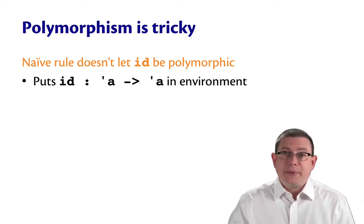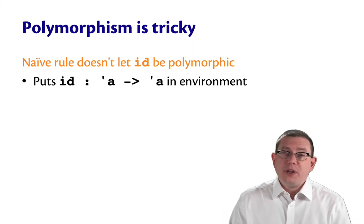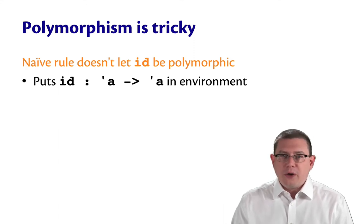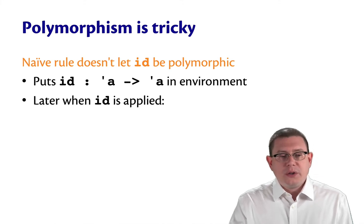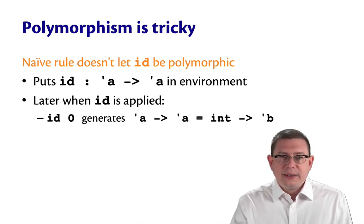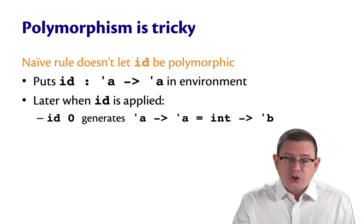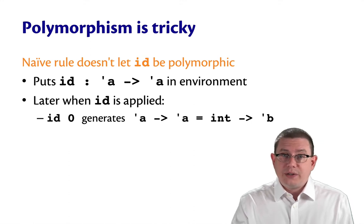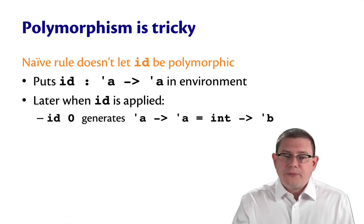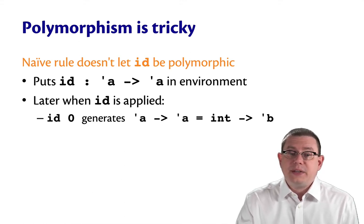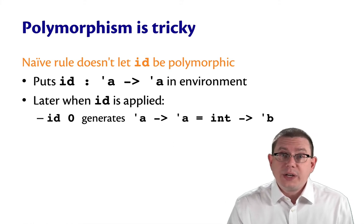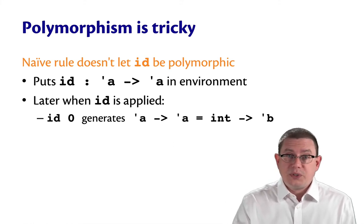Well, the problem is that the naive let rule we just gave doesn't let the identity function be polymorphic in that way. Here's what happens. It will go to put the identity function under the type alpha arrow alpha in the environment. Then later, when id is applied, well, when you apply it to an integer, that generates a constraint. That the type of that function needs to be the type of its argument arrow something else. So the argument there is known to be int. Therefore, that's going to lead to a constraint eventually that alpha equals int.